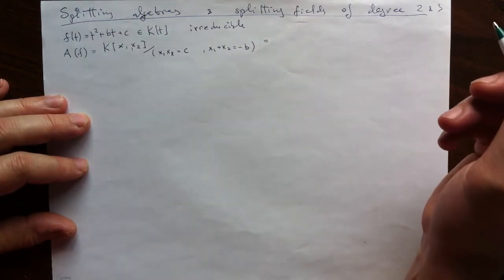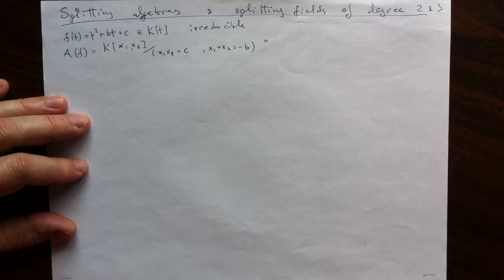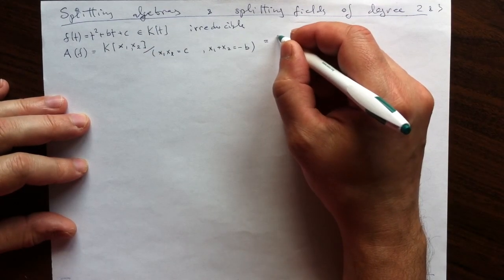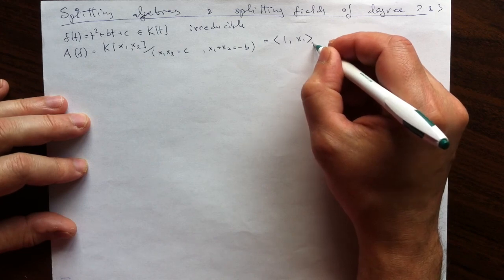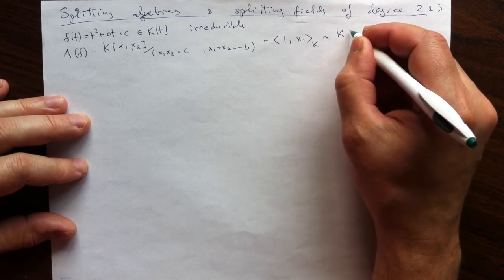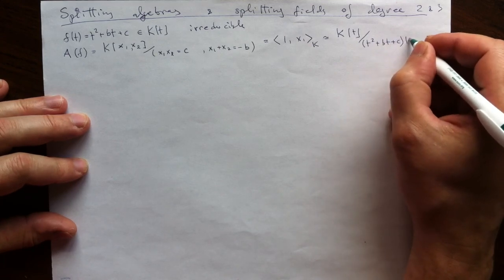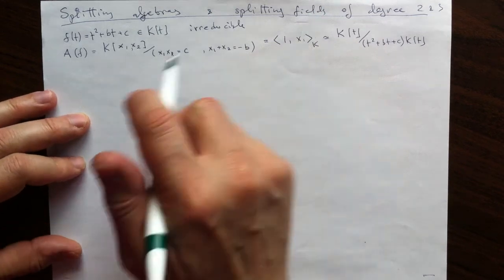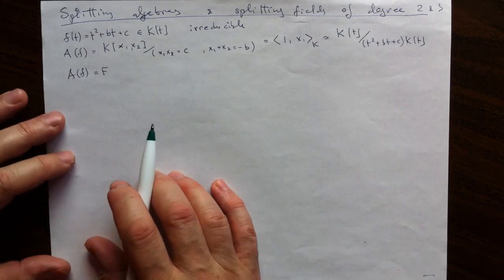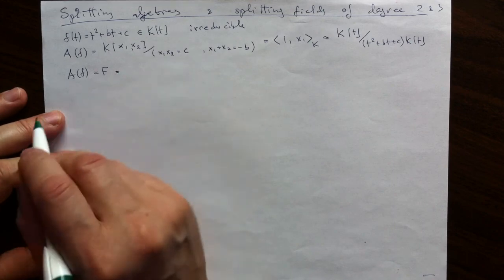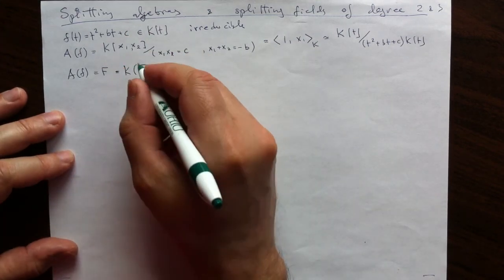It's easy to see that any of the roots is a root of this polynomial. This quadratic equation generates this algebra, and we can see it as a vector space over k spanned by 1 and x1. Since x1 is a root, it is isomorphic to the quotient by our irreducible polynomial, so it is a field. The splitting algebra is a splitting field, which I'll call M or the splitting field F.